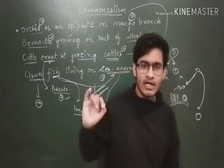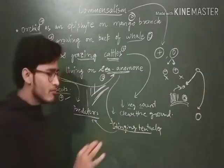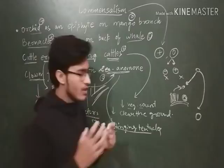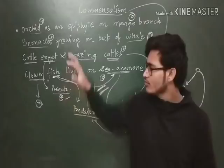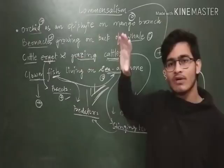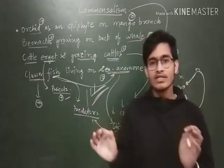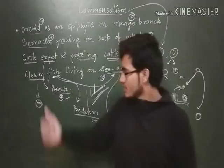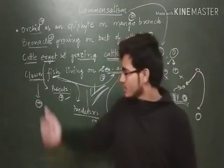So the most important examples are: orchid and mango, barnacles and whale, sea anemone and clownfish, and the cattle egret relationship. You can easily identify who is getting benefited and who is not. These four examples of commensalism are very important from an examination point of view — you should remember all of them and know which organism is positive and which is neutral. If you found this video helpful, hit the like button, share with your friends, subscribe to the channel and press the bell icon. Thank you so much!